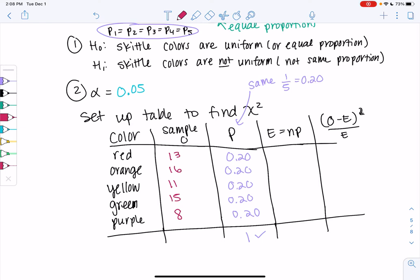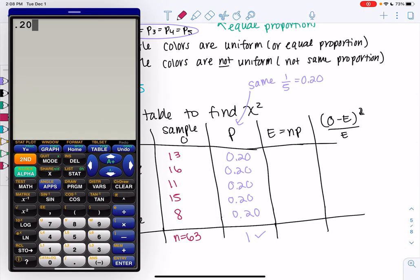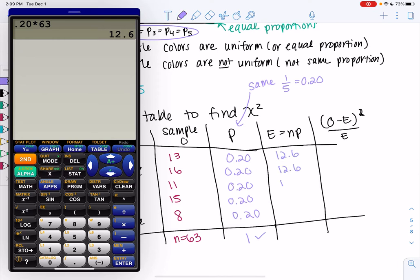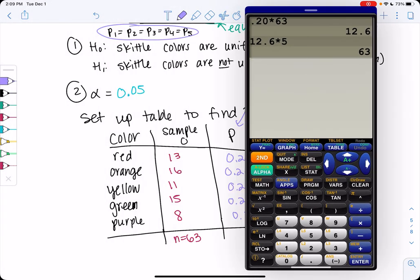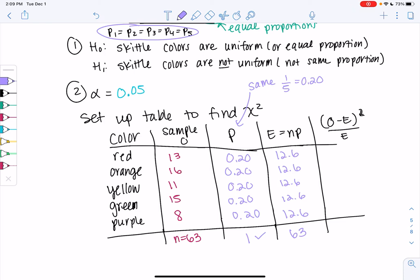We'll use this to find expected. Expected is just going to be that percent times the total, which was 63. So 0.2 times 63, and what's nice is they're all the same: 12.6. So if the colors are uniform, they should all be around 12.6. One might be 12, one might be 13, but they should be close. So some of the colors are maybe a little too different. We have to find those little mini z scores and add them up.